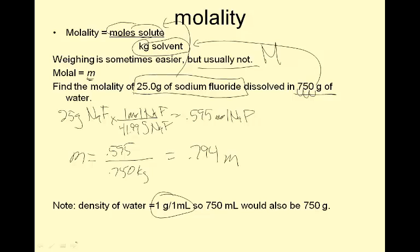So that answer divided by 0.750 is 0.794 molal, is the way you say that. Note, the density of water is one gram per milliliter, so 750 milliliters would also be 750 grams. You should know that.